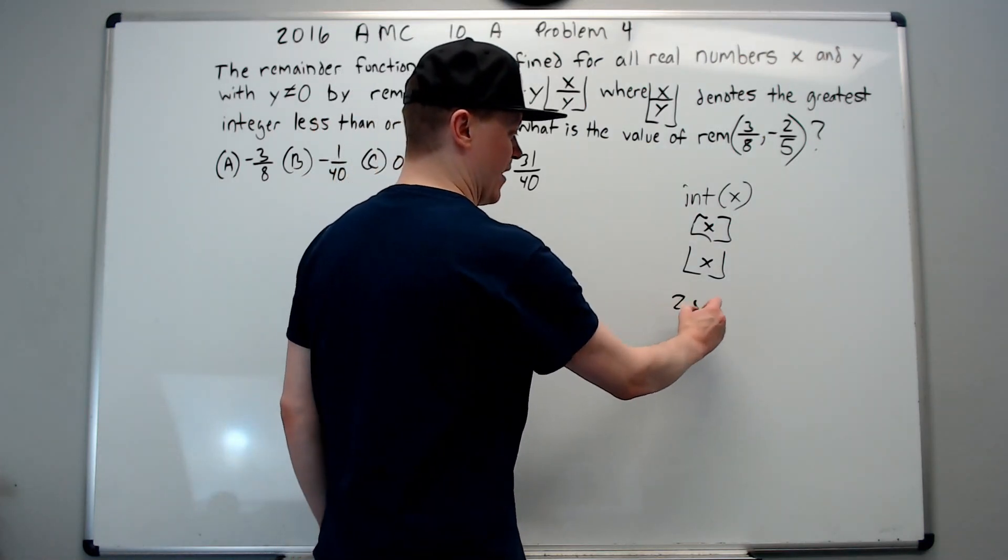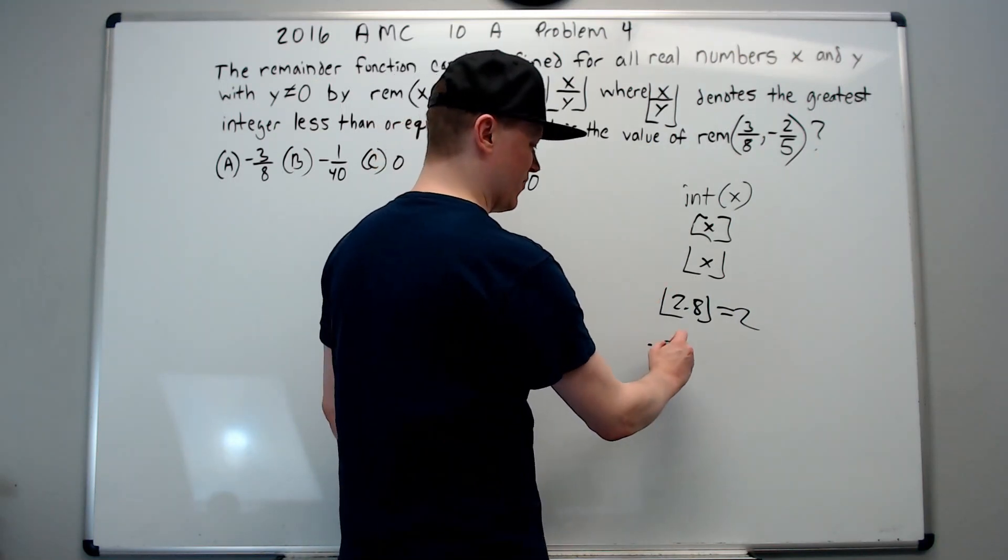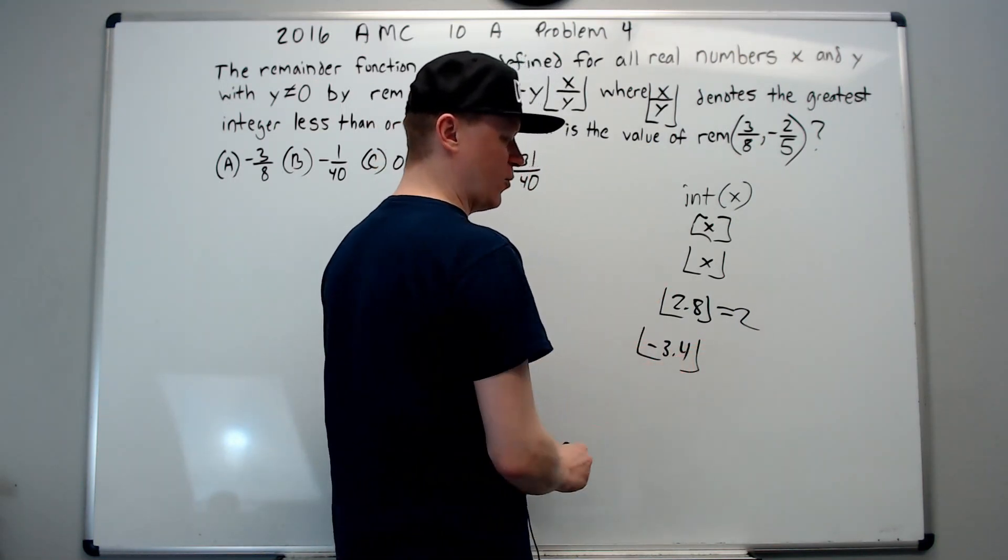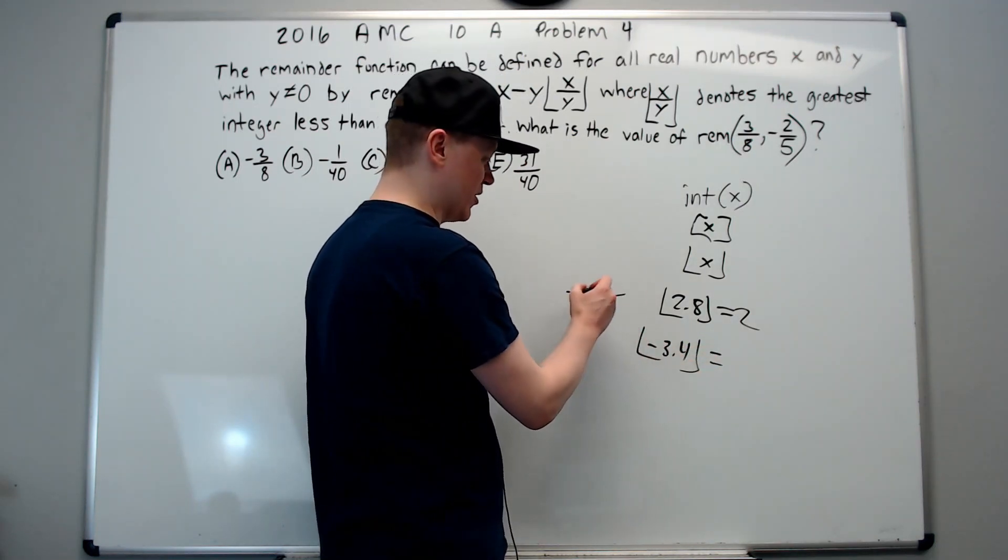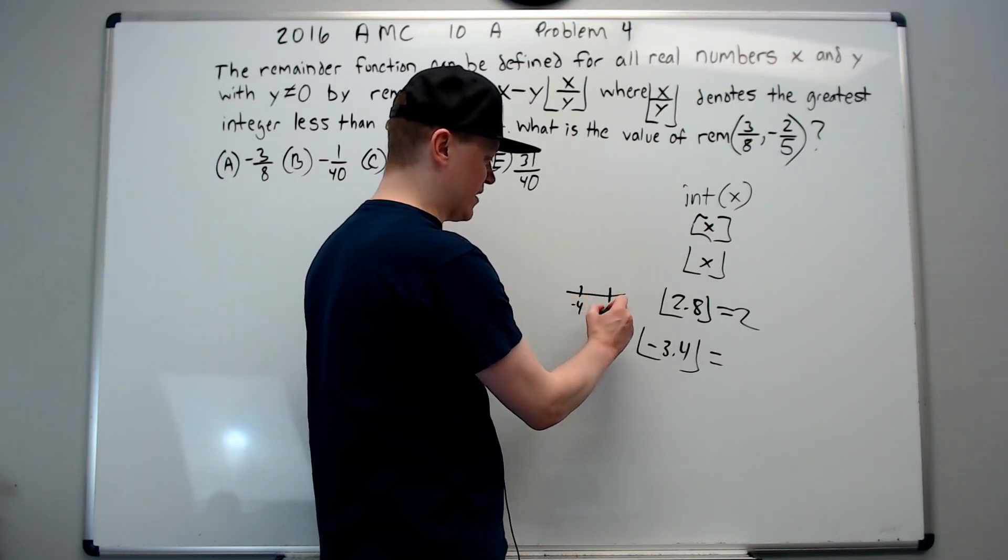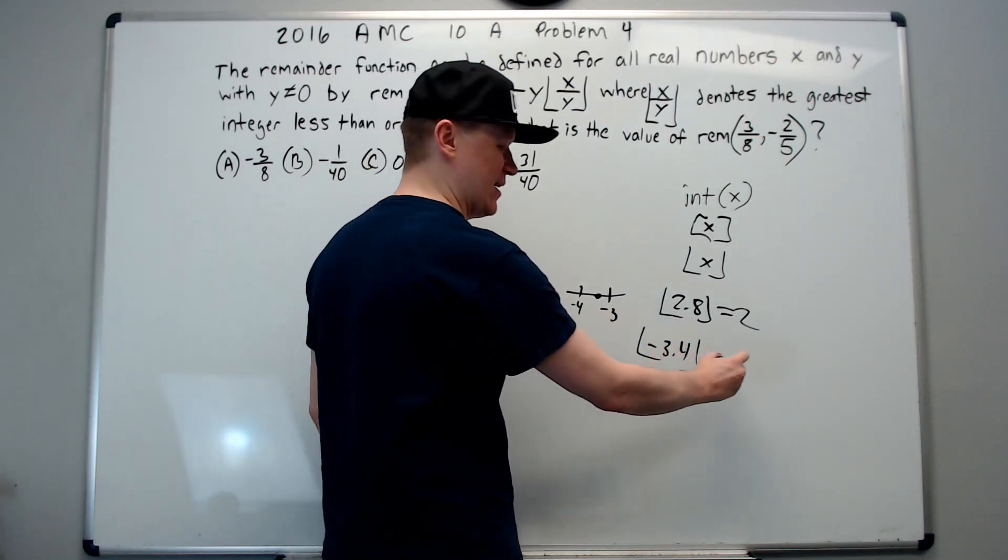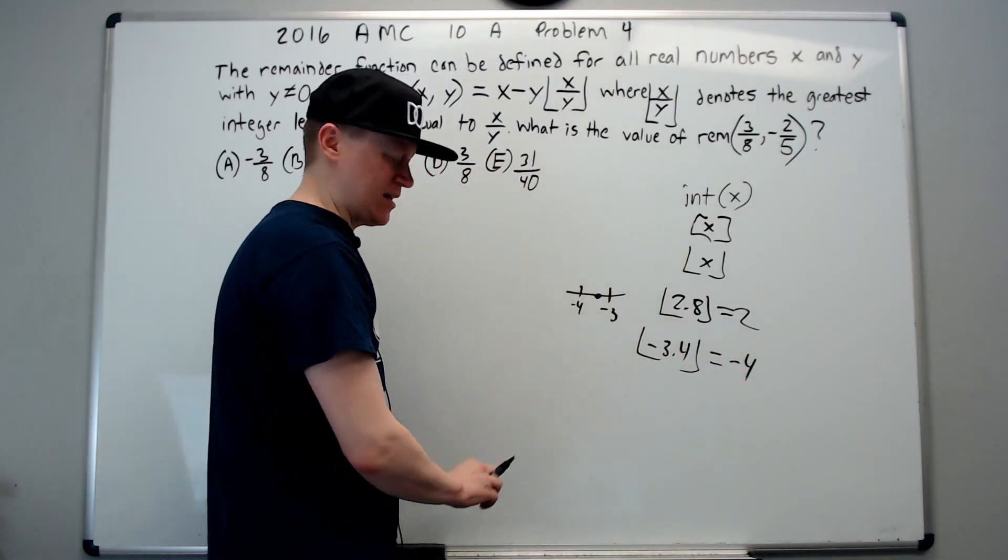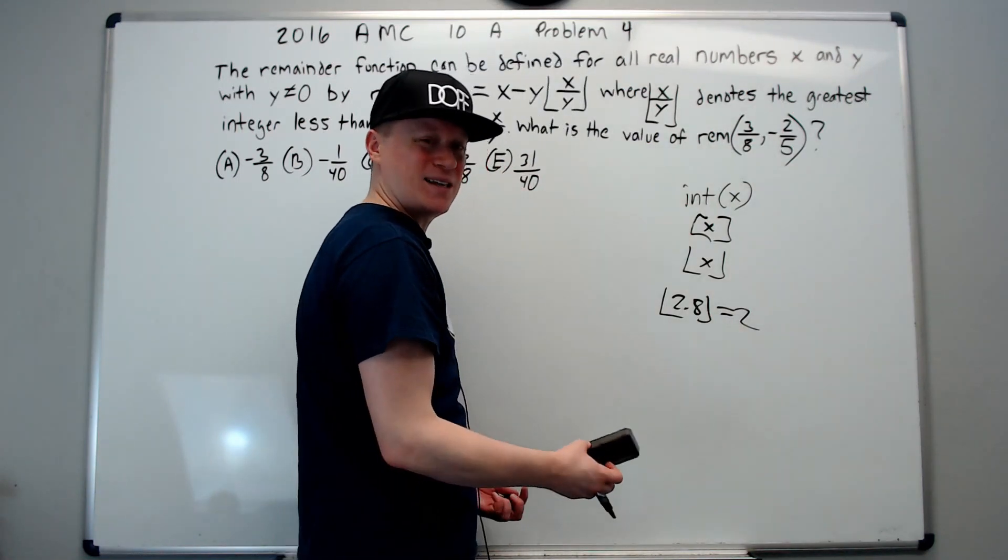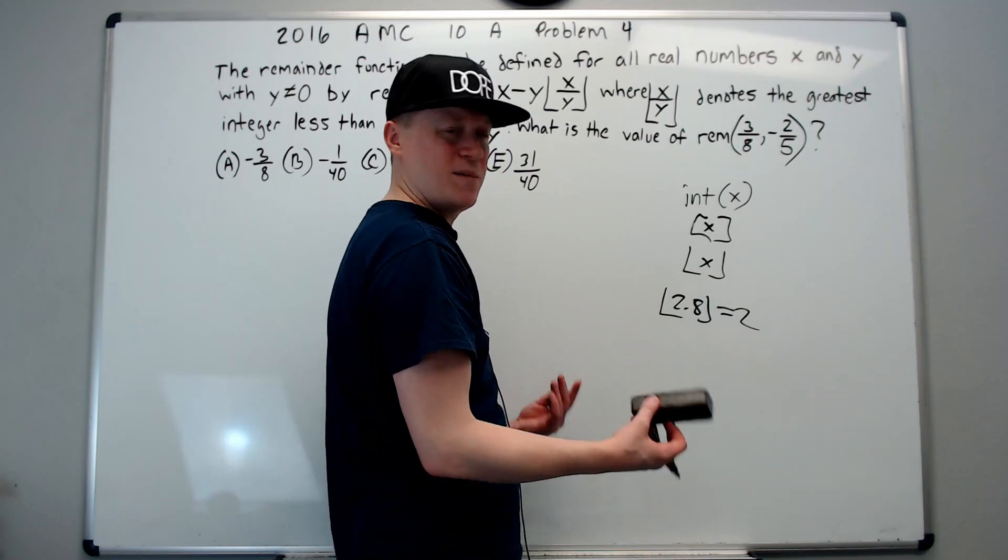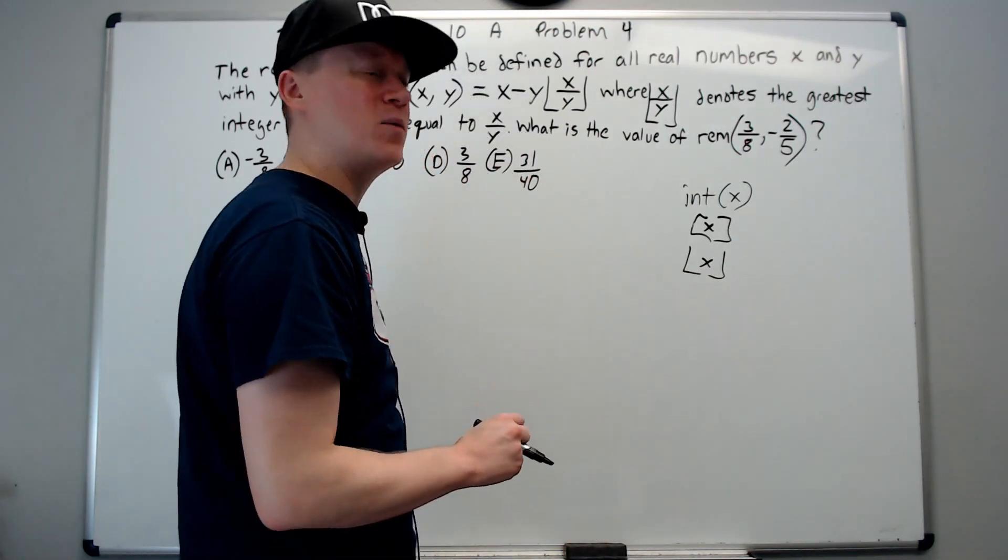All of these do the same thing. They take this value, which is inside, and round it down to the previous integer. For example, if you have 2.8, it's equal to 2. Be careful when you go negative. If you have negative 3.4, that's not negative 3. On a number line, negative 4 is here and negative 3 here and you're right here. You need to round back to negative 4. That's the one thing to be careful about with greatest integer functions.